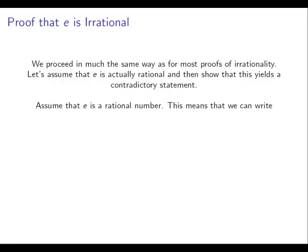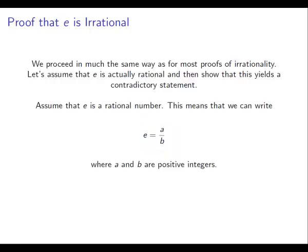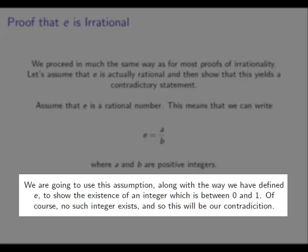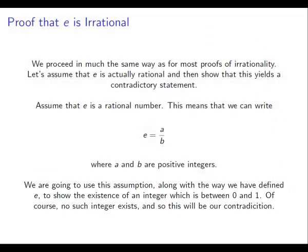Okay, so let's do that. Let's assume that e is rational, and that means that we can write e as a fraction of integers, a over b, where b is not zero. We're going to say that a and b are both positive integers. What we're going to do is use this assumption about e being rational, and also use the definition of e — the 1 over n factorial summation — to show that we can come up with an integer which is between 0 and 1. Of course, no such integer exists, so this is going to be our contradiction.